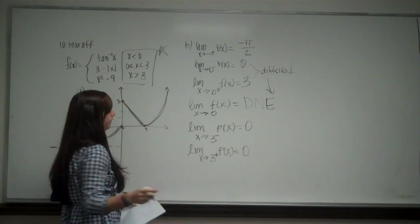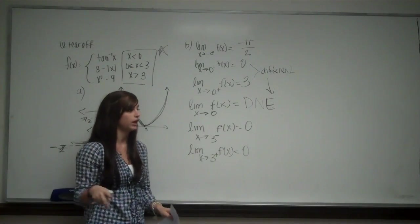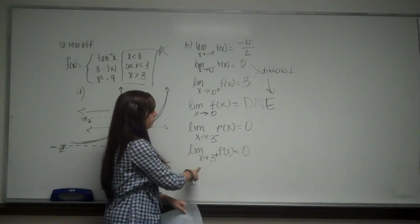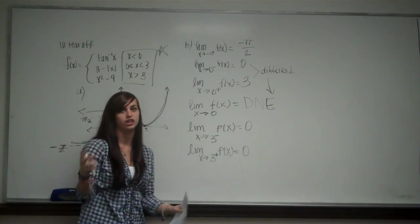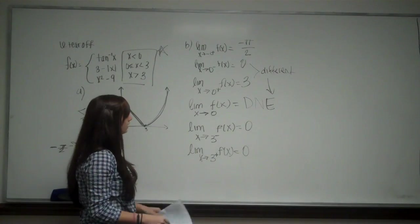So now this one, the limit as x just approached 3 would be 0 because the right-hand limit and the left-hand limit agree. So that's that part.